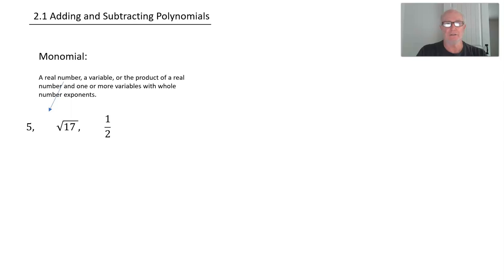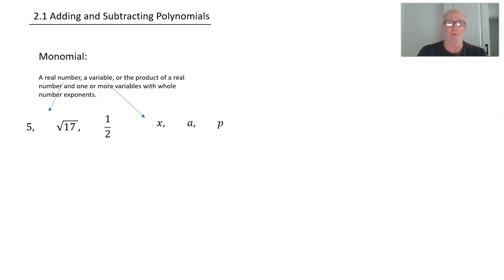Next is a variable. So any variable is a monomial. A variable represents some quantity. So x is a monomial. A is a monomial. P is a monomial.